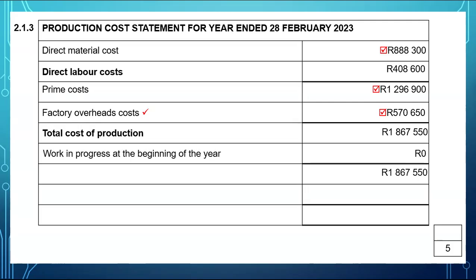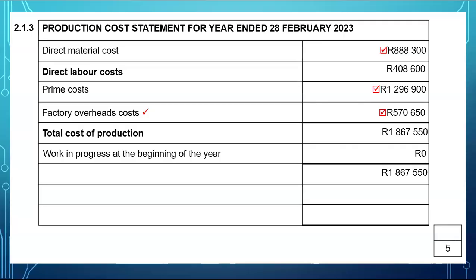For work in progress at the end of the year, note that this was given to you. Work in progress at the end of the year you will have $235,000. Now, that $235,000 — do we show it with brackets or without brackets? We show it with brackets. These are unfinished goods that will not be finished, that's why we're subtracting them. Because in this note we are simply calculating the cost of finished goods, and that $235,000 represents goods that are unfinished. That is why we subtracted.